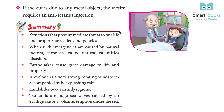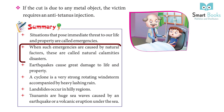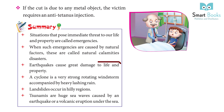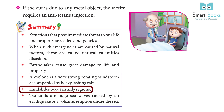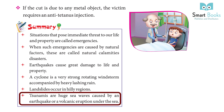Summary: Situations that pose immediate threat to our life and property are called emergencies. When such emergencies are caused by natural factors, these are called natural calamities or disasters. Earthquakes cause great damage to life and property. A cyclone is a very strong rotating windstorm accompanied by heavy lashing rain. Landslides occur in hilly regions. Tsunamis are huge sea waves caused by an earthquake or a volcanic eruption under the sea.